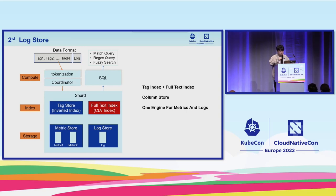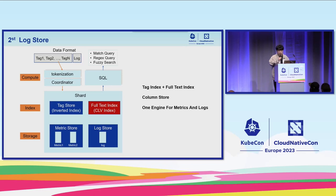When it comes to the log store, we introduced a new type of full-text index called the CLV index. When log data is ingested into our system, we tokenize it and shard it. The tag set is used to build the tag index, and tokens from the log content are used to build the series index. Logs use the same columnar storage layout. This means we can store both metrics and log data in one system.